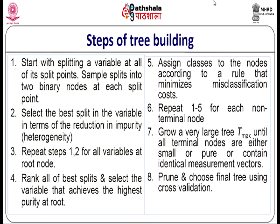Repeat steps 1 and 2 for all variables. If you have 19 variables, each with different split points, repeat the steps for each. Then rank all the best splits — one best split per variable — to get 19 best splits. Choose the one that achieves the highest purity at the root. Assign classes to nodes according to a rule that minimizes misclassification. Then repeat steps 1 to 5 for each non-terminal node.